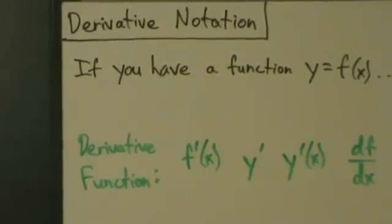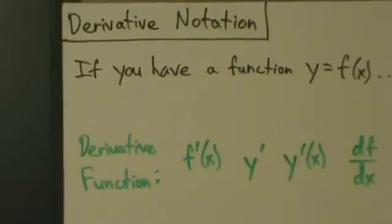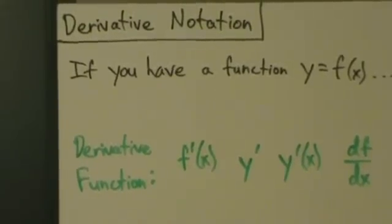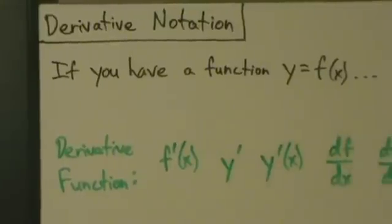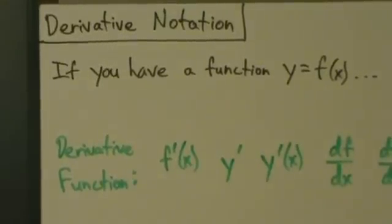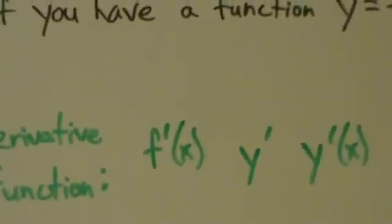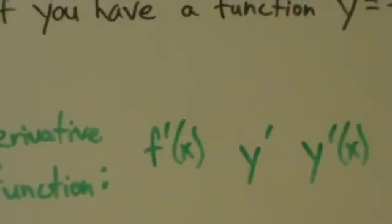Alright, so we've been talking a lot about derivatives, and we talked about the alternate definition. So let's go ahead and start talking about some derivative notation. There are a bunch of different ways of indicating the derivative. So if you have a function y equals f of x, and you want to talk about the derivative function, the one we've been looking at all this time is f primed of x.